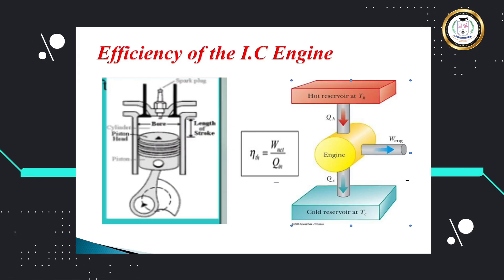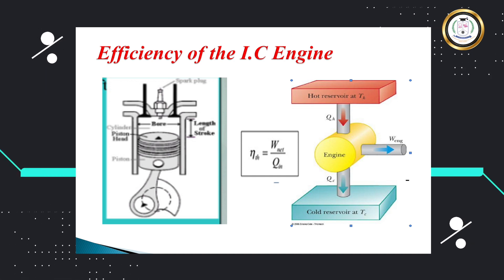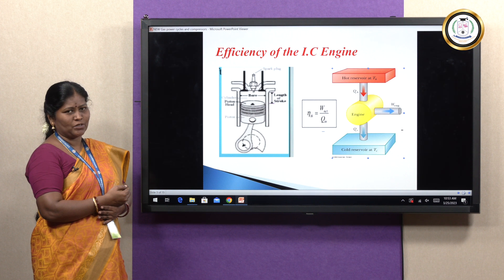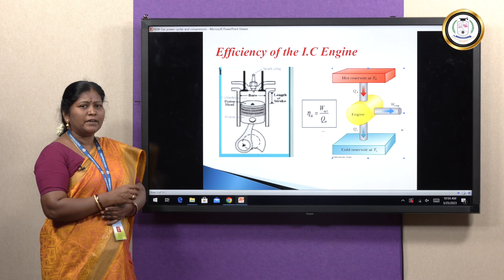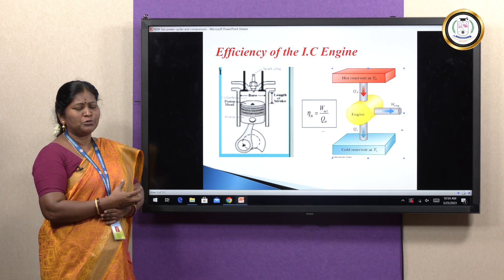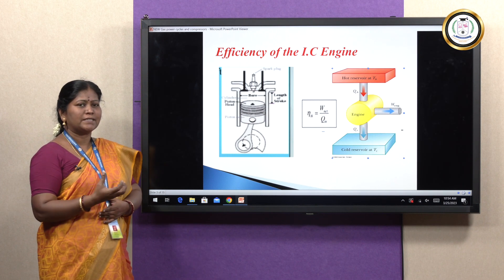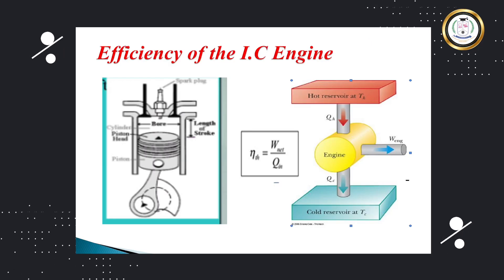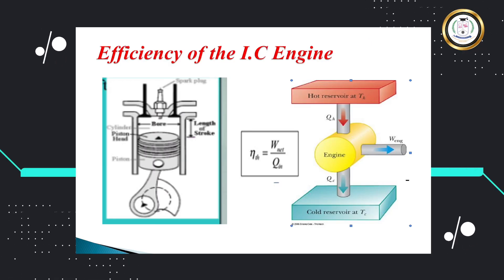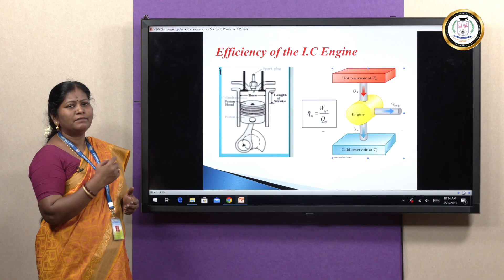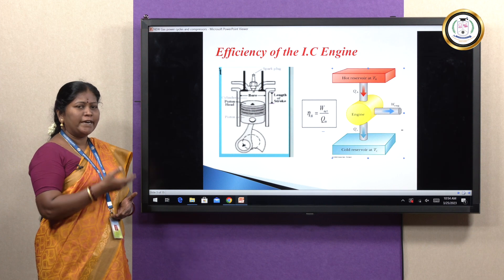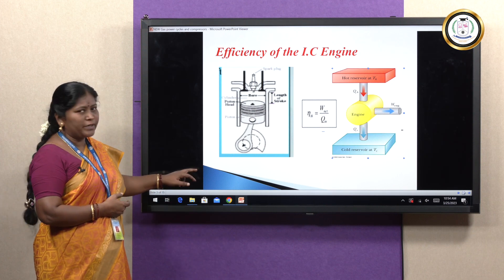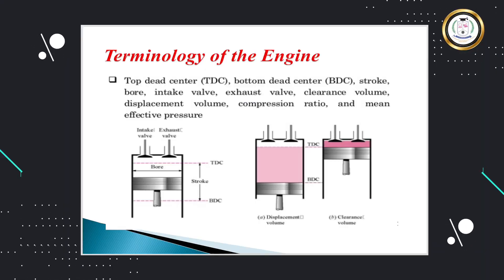The cycle of operations in the IC engine involves suction, compression, expansion, and exhaust. At the end of the compression, we provide a spark to the system. Then enormous heat energy is produced, and that heat is converted to power to move the engine. The reciprocating motion is also converted to rotary motion — the to-and-fro motion of the piston up and down is transmitted as rotary motion.